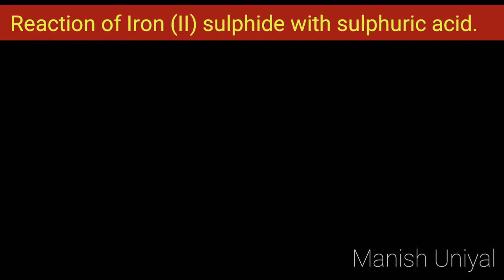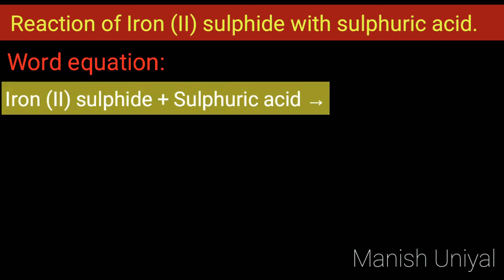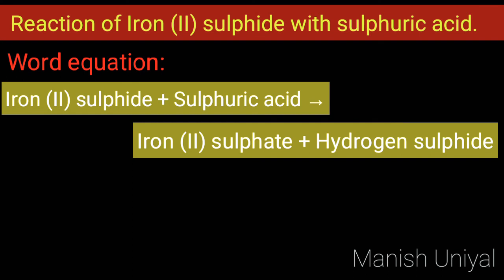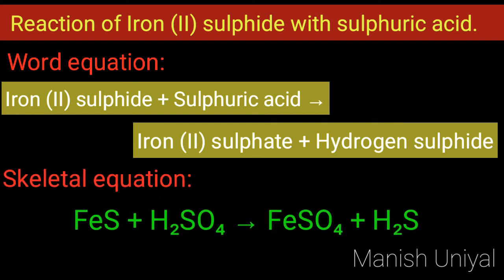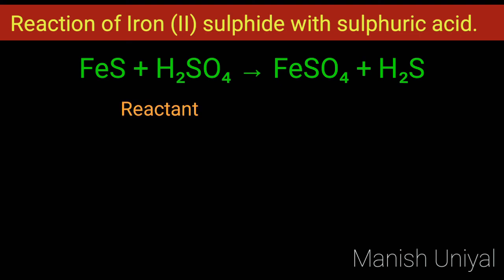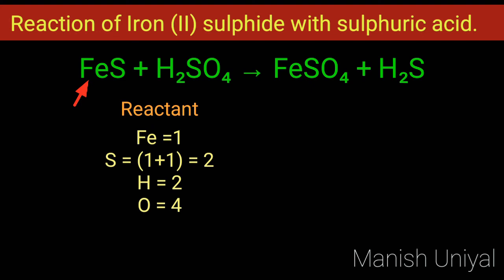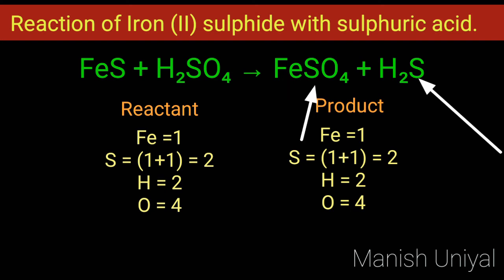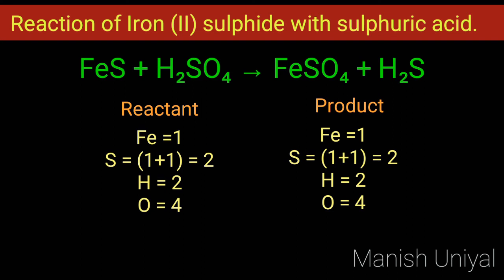Reaction of iron(II) sulfide with sulfuric acid. The word equation is: iron(II) sulfide plus sulfuric acid gives iron(II) sulfate plus hydrogen sulfide. The skeletal equation is: FeS + H₂SO₄ → FeSO₄ + H₂S. In the reactant side, Fe is 1, sulfur is 2, hydrogen is 2, and oxygen is 4. In the product side, Fe is 1, sulfur is 2, oxygen is 4, and hydrogen is 2. The number of atoms on the reactant side is equal to the number of atoms on the product side. Hence, it is already a balanced chemical reaction. Thanks for watching.